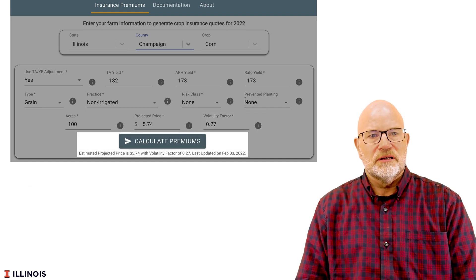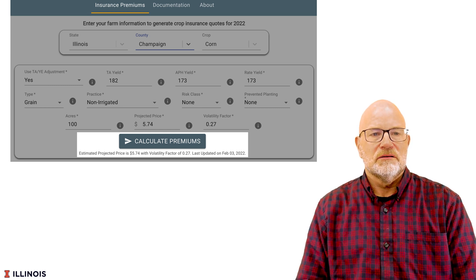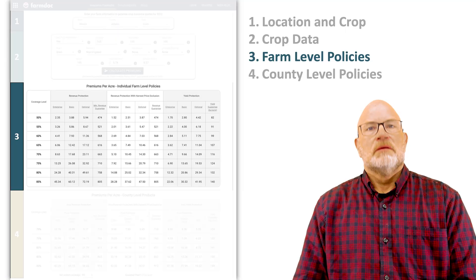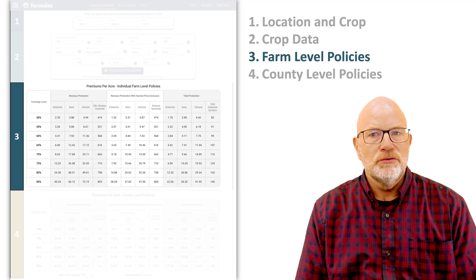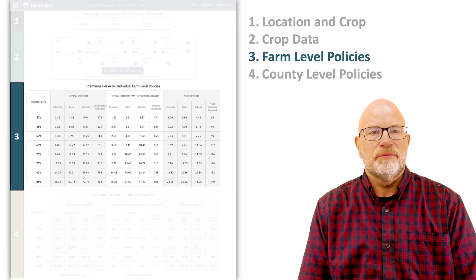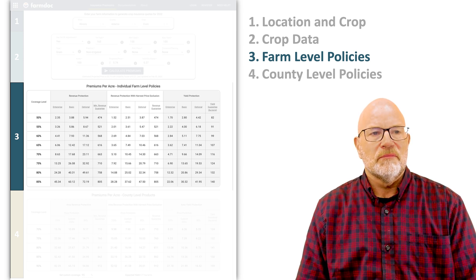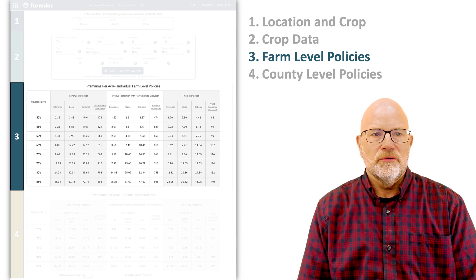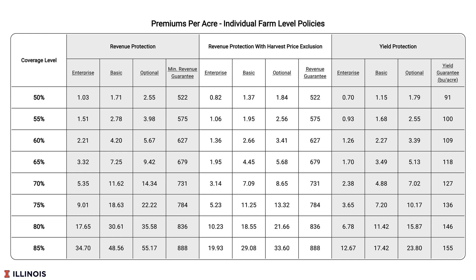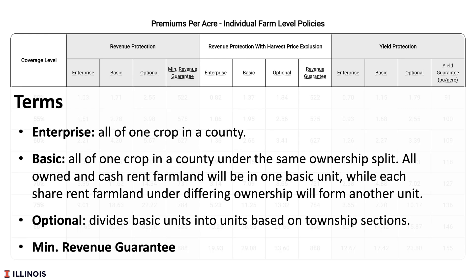Once you've entered all those inputs, you can calculate premiums, and you can always come back and look at those premiums. There will be two main panels of premiums. The first one is farm level premiums. We have those premiums for different products, and within each product we have three different unit types: enterprise, basic, and optional. Premiums will be lowest for enterprise units, second lowest for basic, and highest for optional.